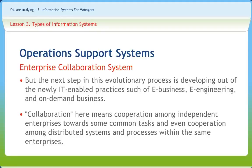Abbreviated as ECS, Enterprise Collaboration Systems is a type of information system that uses a variety of information technologies to help people work together. It helps us collaborate to communicate ideas, share resources, and coordinate cooperative work efforts as members of formal and informal process and project teams and other work groups that are a vital part of today's organizations.